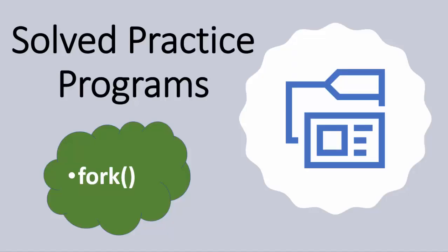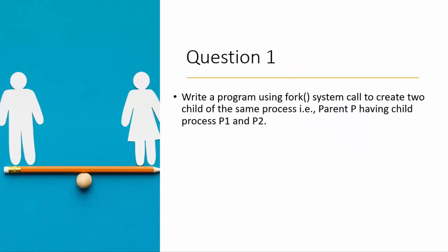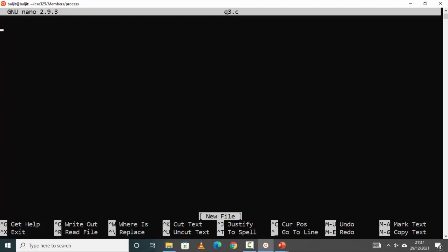Hello everyone, today we are going to focus on questions related to process creation using the fork system call. We are going to cover two questions. The first question is: write a program using the fork system call to create two children of the same process — a parent process P having two children P1 and P2. Once you run the program, that becomes the parent process, and it should have two child processes, two siblings P1 and P2.